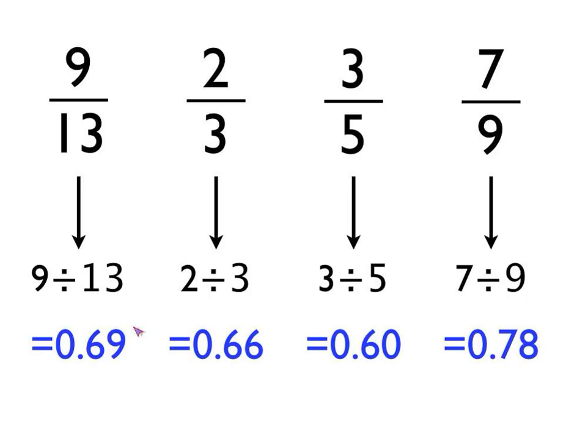Then it's straightforward. You look at the decimal numbers and it's really quick and easy to say 0.78 is the largest of those. So 7 ninths must be the largest fraction that we've got there in that top row.